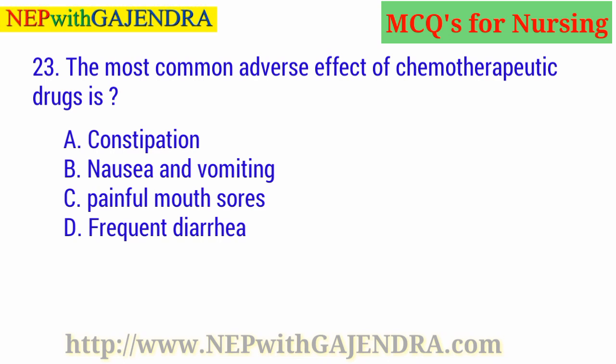The most common adverse effect of chemotherapeutic drugs is: A. Constipation. B. Nausea and vomiting. C. Painful mouth sores. D. Frequent diarrhea. The right answer is B: Nausea and vomiting.